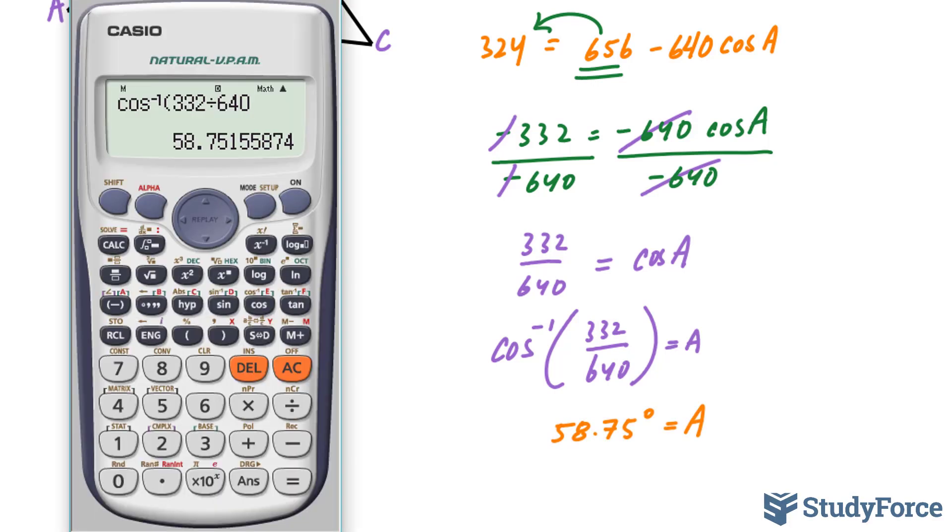And just to be clear, had you done 332 over 640, and you had gotten the number 0.51875, and instead of writing this whole thing down, you only wrote down 0.51. Let me show you what would happen. 0.51. This angle and this angle are totally off.